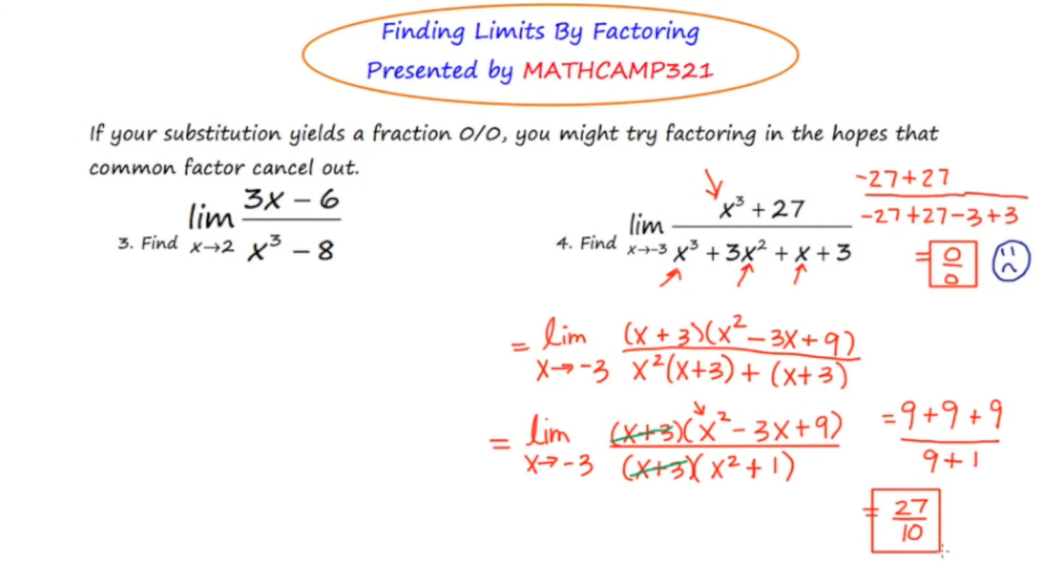So in summary, for this lesson, I wanted you to first try direct substitution. Because if that works, it's really the easiest way to evaluate a limit. But in every single case, we ended up with this fraction 0 over 0, or indeterminate form. And that meant we had to try something else. And specifically for this video, what I wanted you to try was factoring in the hopes that there were factors common to the top and the bottom so that they could cancel out and then the resulting direct substitution would work.